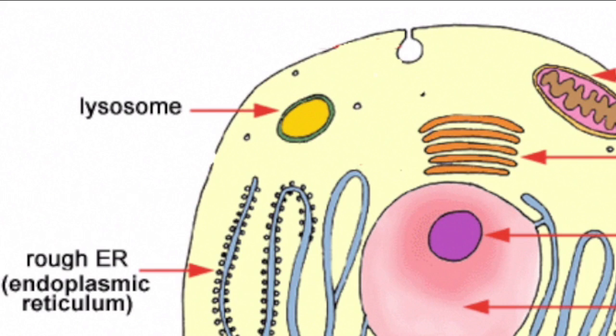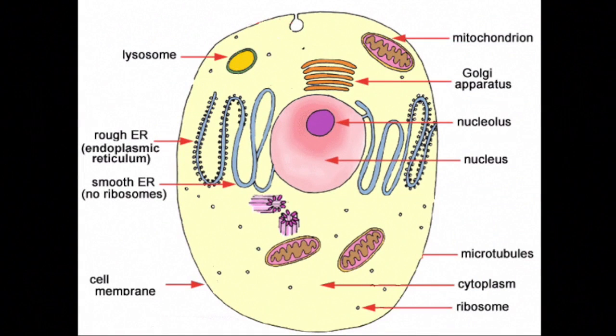However, chloroplasts do not need to break down food particles as they only get sunlight which is already in the form of energy that can be converted into a different energy and does not need to be broken down by lysosomes. Now we are done with the unique structures.